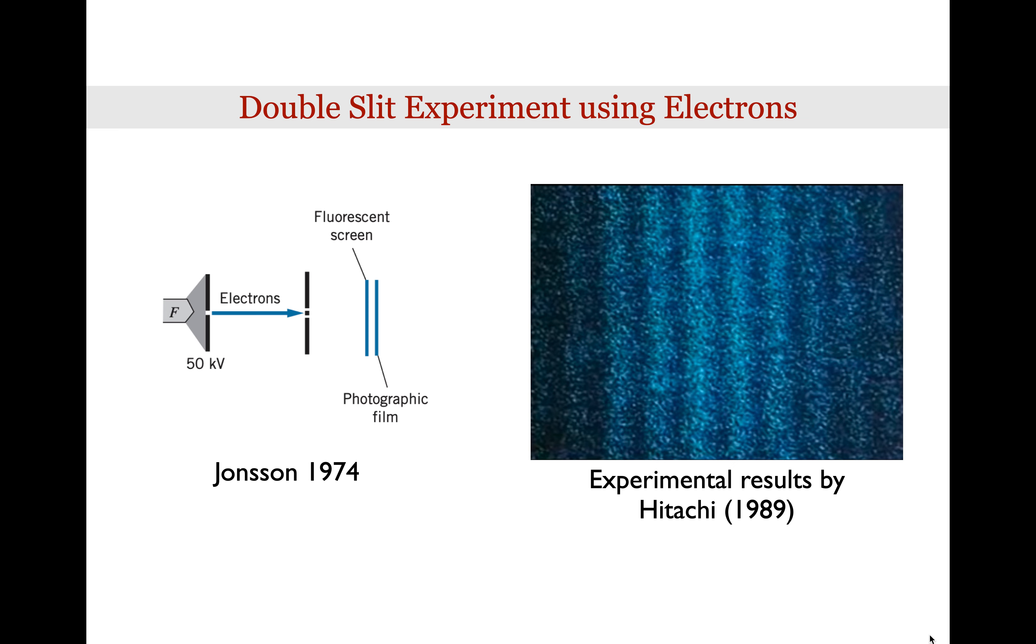On the other hand, when we actually observe the electrons on the screen, they're acting like particles, because the electrons are showing up as dots, or point-like objects on the screen. So the electrons seem to have a dual nature. When they're going through the slits, they seem to act like a wave. When they show up on the screen, they seem to be acting like particles.